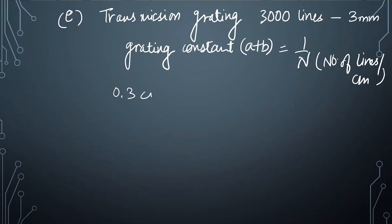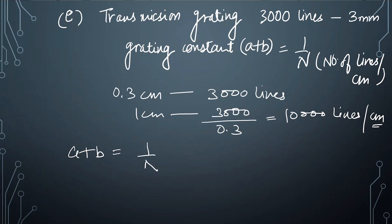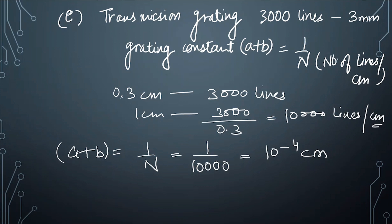The grating has a width of 0.3 centimeters containing 3000 lines, so the number of lines per centimeter is 10,000 per centimeter. The grating constant, a plus b, equals 1 over N, which gives 1 over 10,000 = 10 to the power minus 4 centimeters. The order of spectrum N is 1.